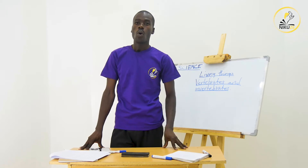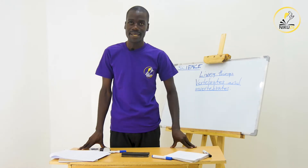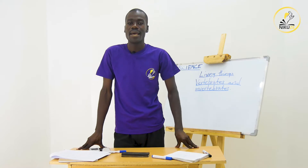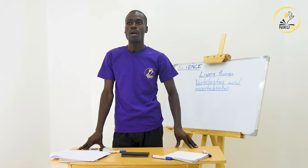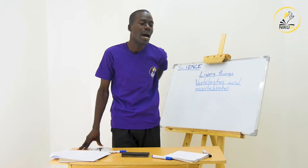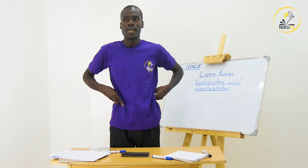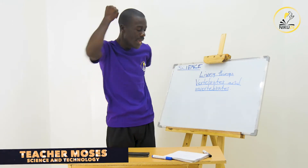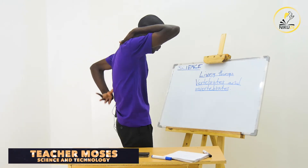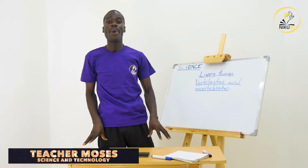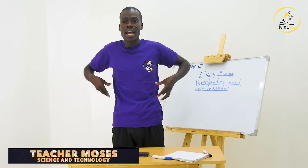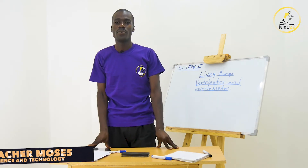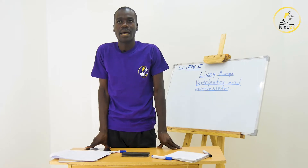So what do we mean when we say vertebrates? Vertebrates are big animals that have a backbone — a bone at their back that the ribs are joined to. This bone is what we call the backbone. Any animal with that bone, where the ribs are joined, we refer to as vertebrates.